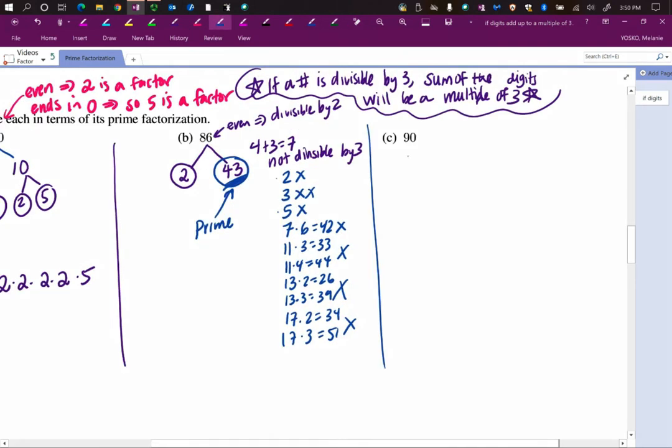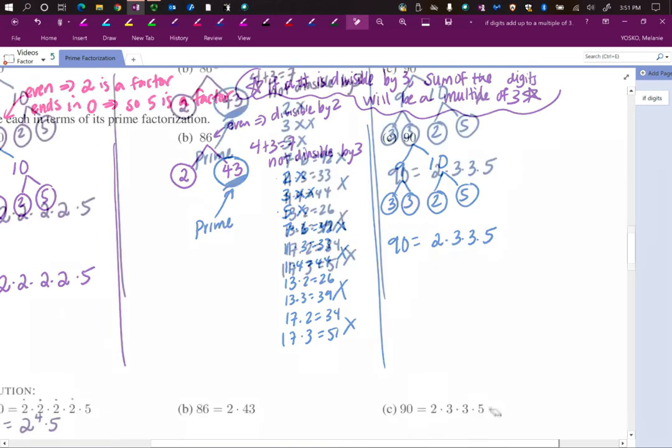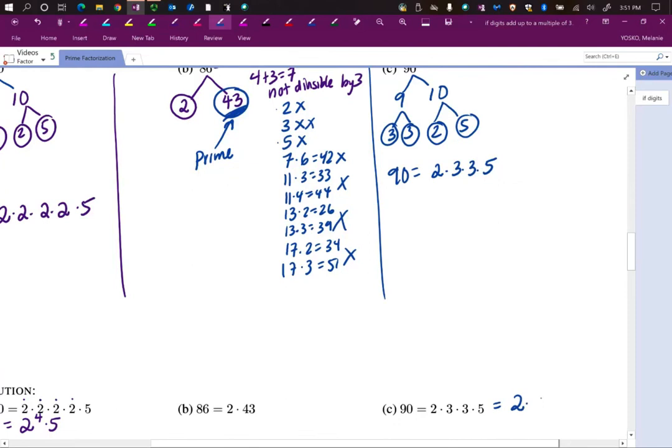90. I'm going to do 9 times 10. I don't always have to think with a prime number. Remember, I can pick two composite numbers. 9 has factors of 3 and 3. Those are both primes, so I can circle them. 10. I can break that down into 2 and 5. Then I put them in order. 90 equals 2, then I write the next smallest prime, 3. There's 2 of them, write it twice, times 5. You can also write this as 2 times 3 squared times 5.